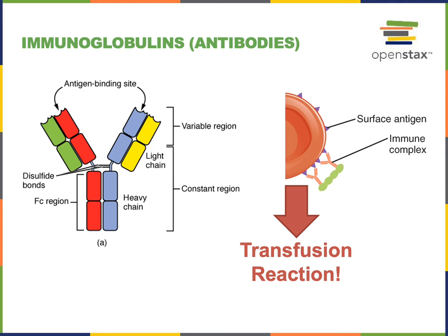If a patient receives a blood transfusion that contains surface antigens on the erythrocytes which are not normally found in that patient's blood, the patient's immune system will produce antibodies that can bind to the surface antigens on the donor blood and attack those erythrocytes, causing what's known as a transfusion reaction. Transfusion reactions can then lead to organ failure complications and death.